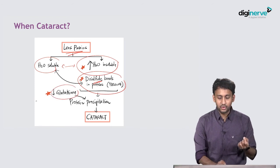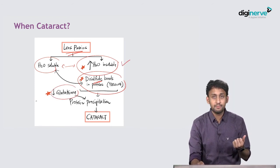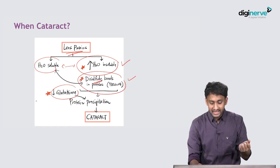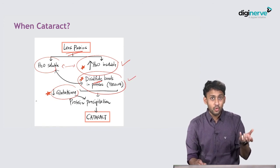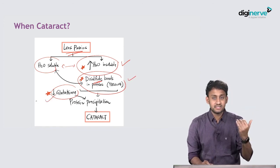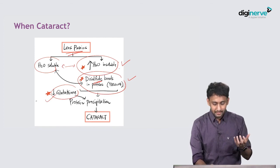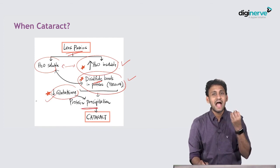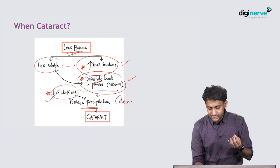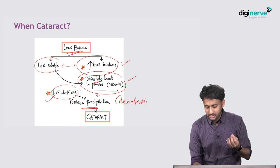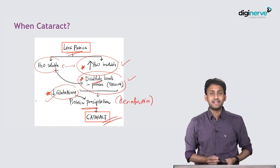Water insoluble proteins are more, disulfide bonds between proteins are more, glutathione is less. Because of these three reasons, there is protein precipitation as a result of denaturation, leading on to cataract.